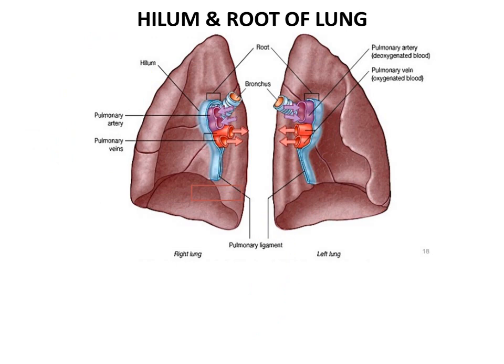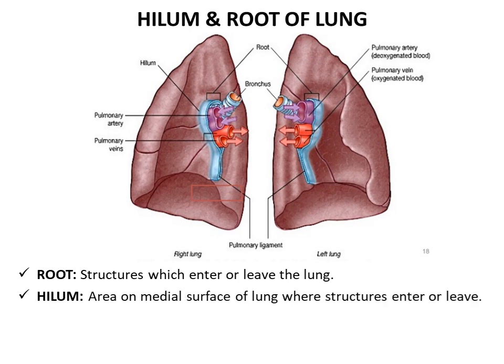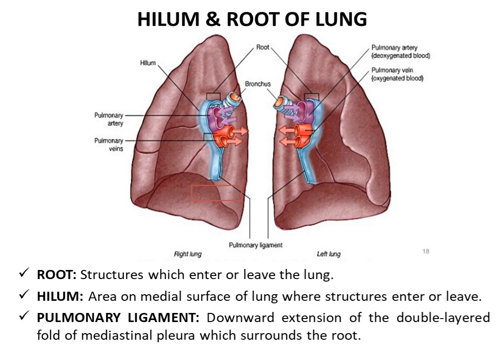Two interchangeable terms used are hilum and root of the lung. Root refers to the structures which enter or leave the lung, for example the bronchus and the pulmonary vessels. Whereas the hilum is the area on the medial surface of the lung where all these structures enter or leave. The root of the lung is enclosed in a double layer of mediastinal pleura. This mediastinal pleura shows a downward extension just below the root of the lung known as the pulmonary ligament, which contains areolar tissue and allows expansion and downward movement of the root during respiration.